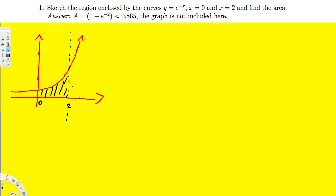To find this area, we use the equation: top function minus bottom function. The top function is e^(-x), and the bottom function is y = 0, so we can just leave it as zero. The limits of integration go from 0 to 2, so we integrate e^(-x) minus 0 dx from 0 to 2.